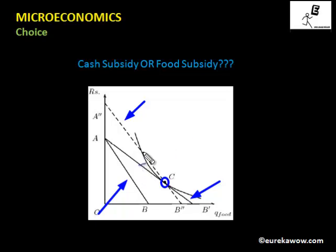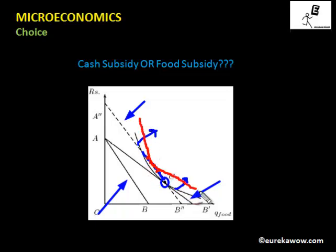There is a portion of the budget line lying to the right of the indifference curve. As a result, with cash subsidy the consumer has the option of choosing affordable bundles that lie on a higher indifference curve. The point of optimality is where the red indifference curve is tangential to the dotted budget line, which lies on a higher indifference curve than the one through point C.